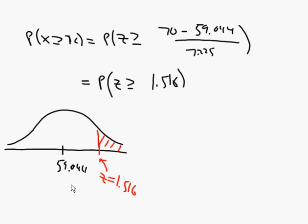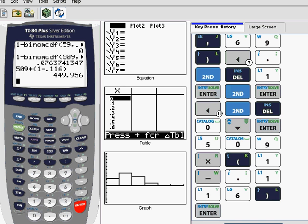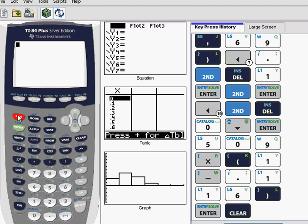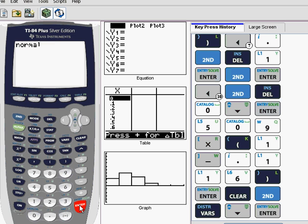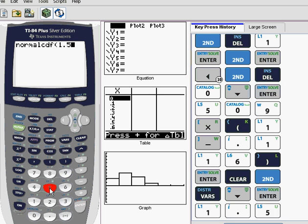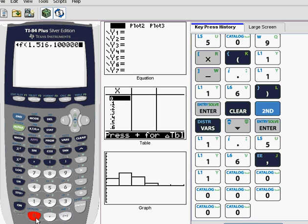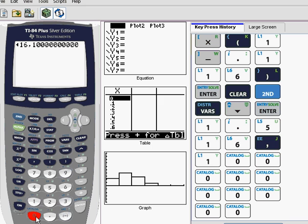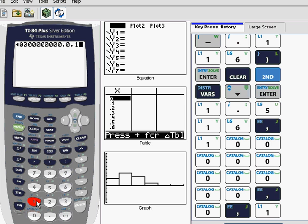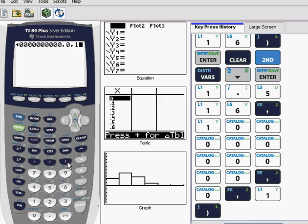Well, our calculator has a normal CDF, so let's use that. We do second distributions, normal CDF. And normal CDF requires a lower bound first. So in our case, it's 1.516. And an upper bound, which is just some huge number. Sometimes people use 1E99. I just put in something big like this. And if we're using a standard normal distribution, which we are here because we're dealing with z-scores, you do comma zero for the mean and comma one for the standard deviation. Actually, you could even leave it off, and it would still work. You hit enter here, and here's the area.